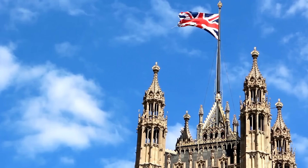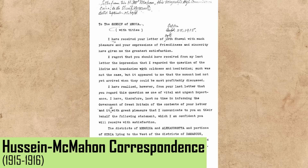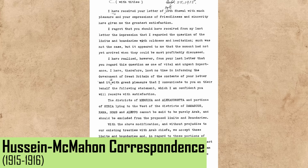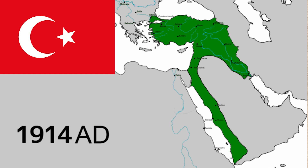The first of these took place from July 1915 to March 1916, when the British High Commissioner in Egypt, Sir Henry McMahon, exchanged a series of letters with the prominent Arab leader and Sharif of Mecca, Husayn ibn Ali. In what is now referred to as the Husayn-McMahon Correspondence, the British government promised support for an independent Arab state if the Arabs would assist the Allies in opposing the Ottoman Empire.